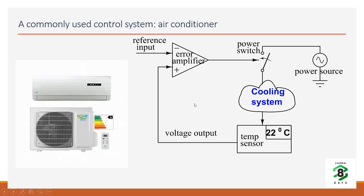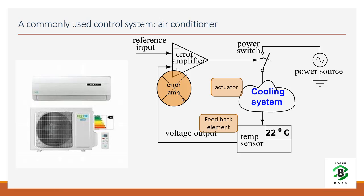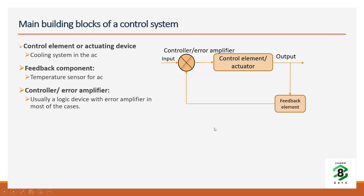In control system terminology, the first one is called the actuator — which is the main system to be controlled and which performs the fundamental purpose; in this case the cooling is done by the actuator. The second function is feedback, which is like keeping an eye on the output. The third component is the controller or error amplifier, which makes a runtime decision to instruct the actuator. These three components distinctly make a control system. Any control system has three components: actuator, feedback, and error amplifier.